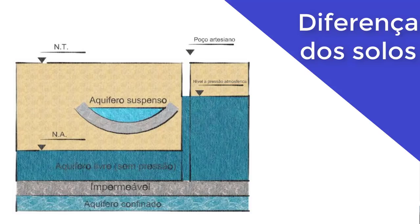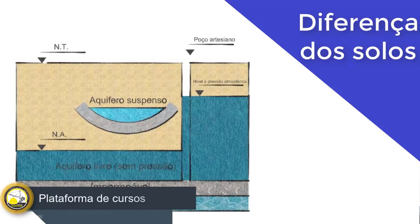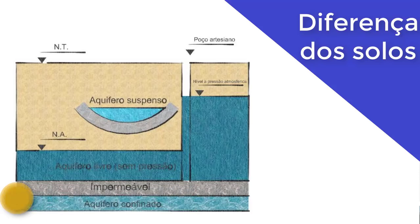A água muda completamente o comportamento do solo. Ela pode diminuir o número de vazios no solo e causar um recalque, ou pode expandir o solo, se for um solo expansivo. Nós temos que analisar a água nos solos e como ela é encontrada. Há um esquema aparecendo na tela onde conseguimos identificar como essa água é encontrada no solo — mostra o nível do terreno e várias formas de se encontrar água dentro de um solo.